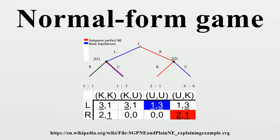In game theory, normal form is a description of a game. Unlike extensive form, normal form representations are not graphical per se, but rather represent the game by way of a matrix.